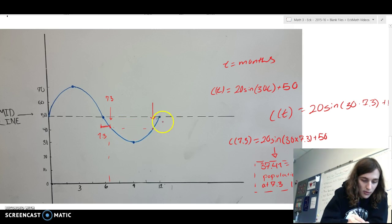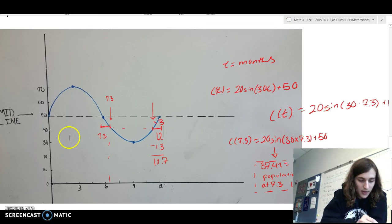So, to find the equivalent point over here, what you would do is you would say, okay, so it's 12 here, and then you do 12 minus 1.3, which would get you 10.7. And those two are at the exact same height. So, it would be the same coyote population here as it would there, and it is the nearest point at which it would occur again.